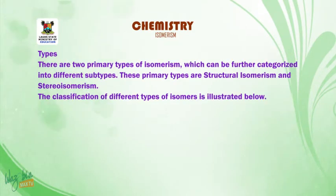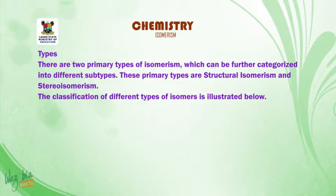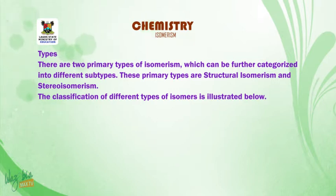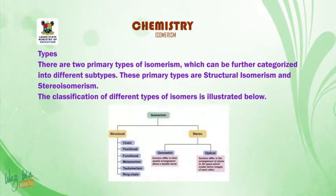Now, types of isomerism. There are two primary types of isomerism which can be further categorized into different subtypes. These primary types are structural isomerism and stereoisomerism. The classification of different types of isomers is illustrated in the chart below.